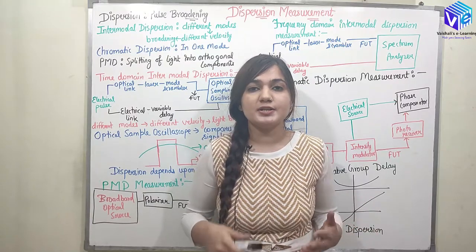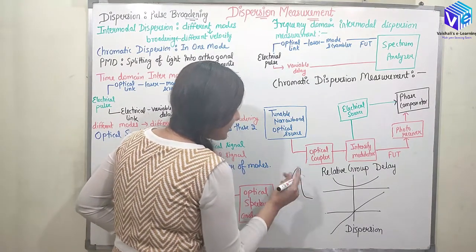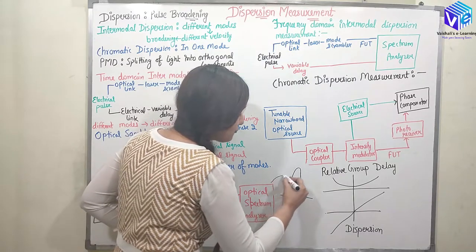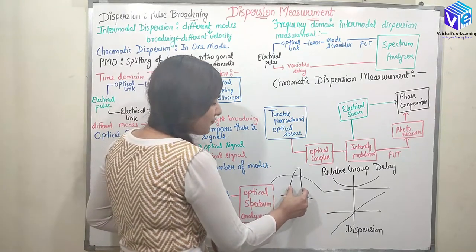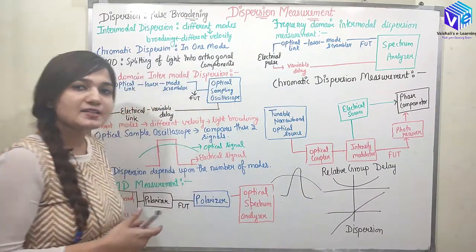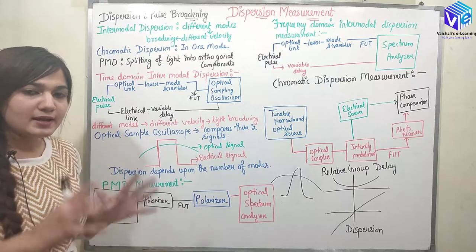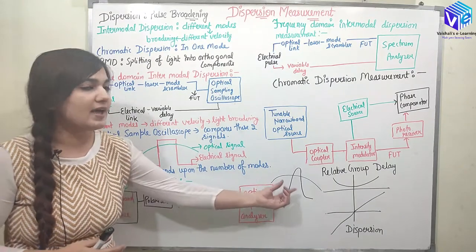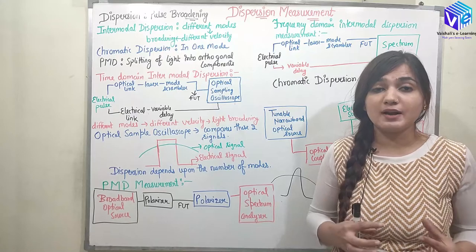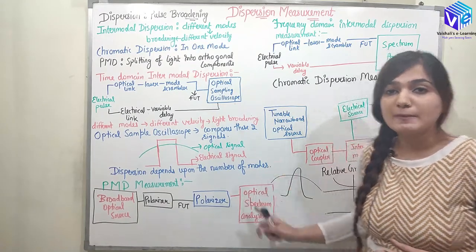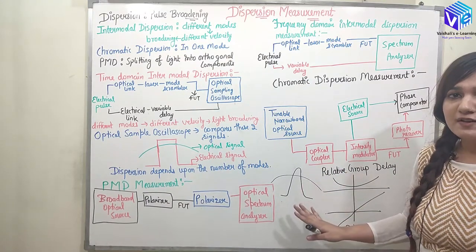First of all, what is dispersion? Dispersion is the effect of pulse broadening. If I have an input pulse and when it propagates through the optical fiber the output pulse is broader. The width of the pulse has increased — the pulse has broadened out — and due to this we have a limitation on the speed of the device. We cannot do fast communication if there is higher dispersion inside the fiber. This is the reason the measurement of dispersion becomes of significant interest. It is going to limit the channel capacity as well.